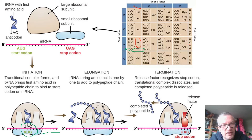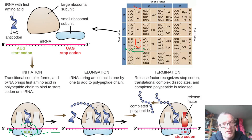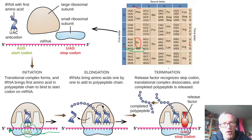The Shine-Dalgarno sequence helps correctly orientate the ribosome. We need it because there could be other AUG codons elsewhere in the sequence, so we need to make sure we get the correct one. Once this is established, with the help of some initiation factors, the large subunit of the ribosome can join along with the first amino acid.